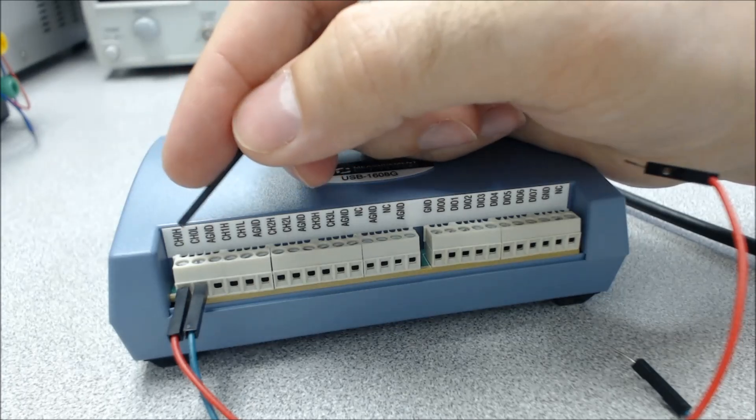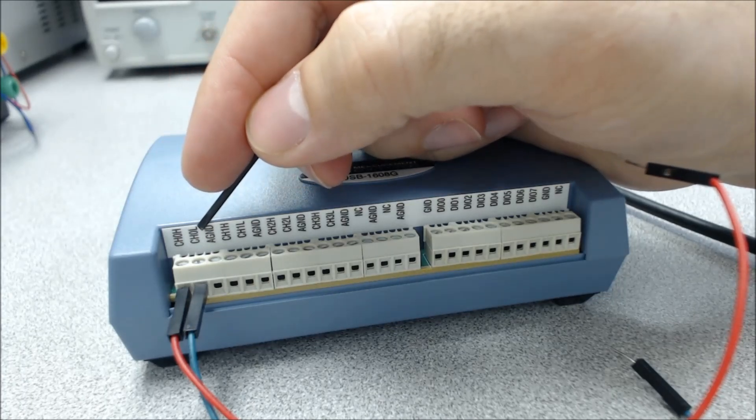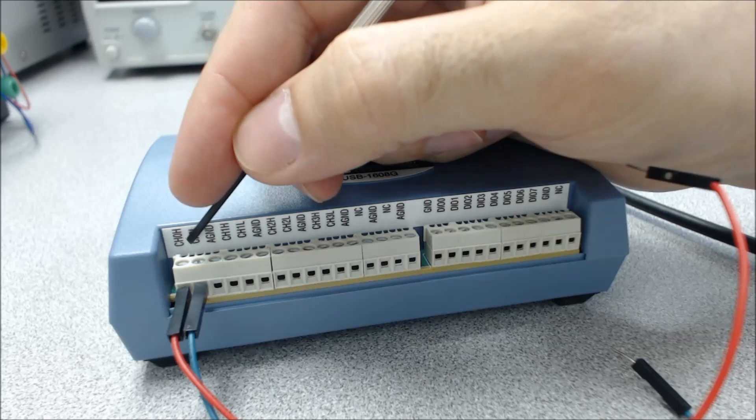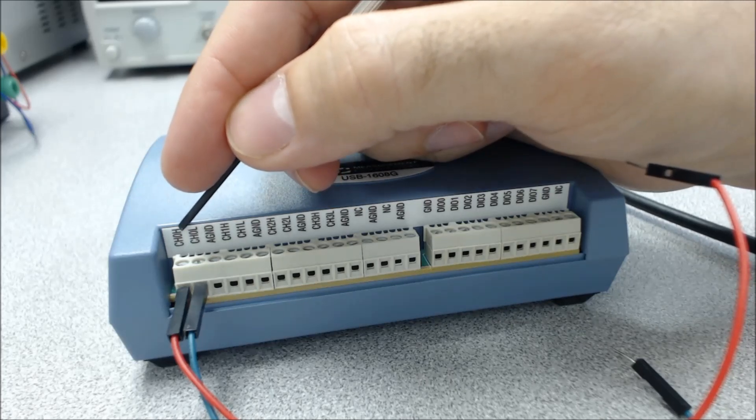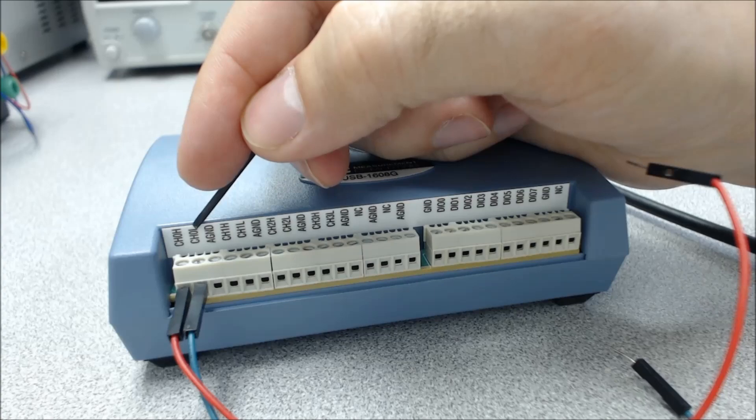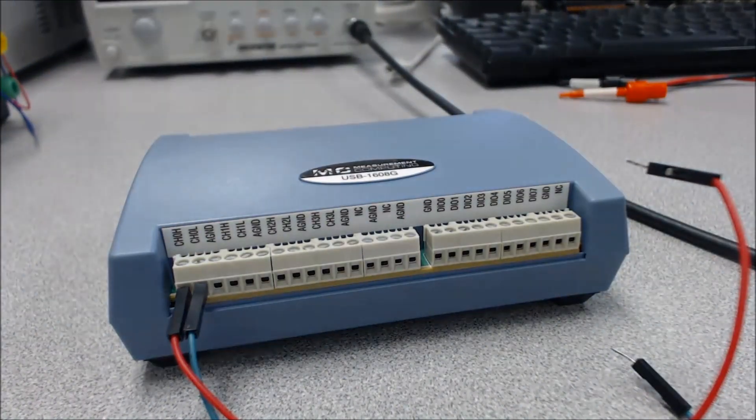What this does is you want to connect channel 0 low to whatever you want to be the reference of your measurement and then channel 0 high is going to be whatever you're measuring the voltage of. So usually low will be ground and high will be some voltage we're trying to measure.